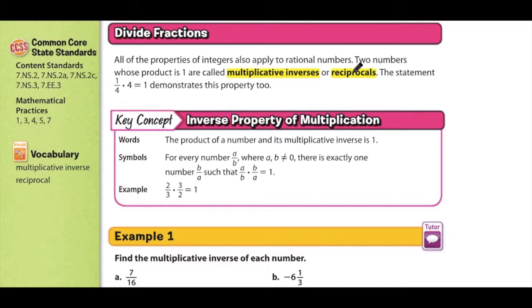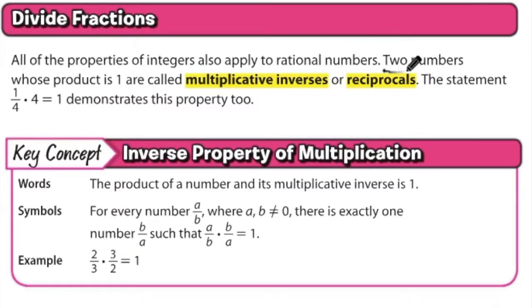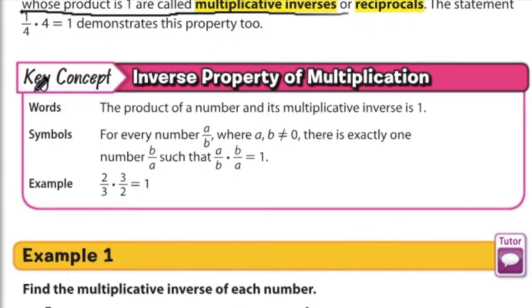The two vocabulary words for Lesson 3-4 are multiplicative inverses and reciprocals. Two numbers whose product is one are called multiplicative inverses or reciprocals. Please take a moment to look at the key concept in words: the product of a number and its multiplicative inverse is 1. In symbols, for every number a over b, where a and b are not equal to 0, there is exactly one number, its reciprocal, b over a, such that a over b times b over a equals 1.